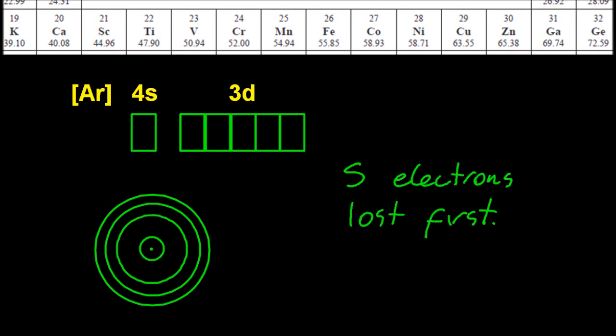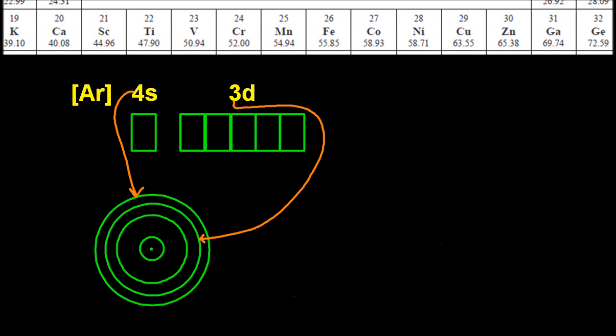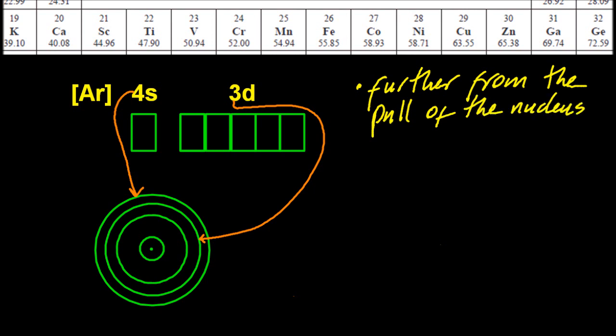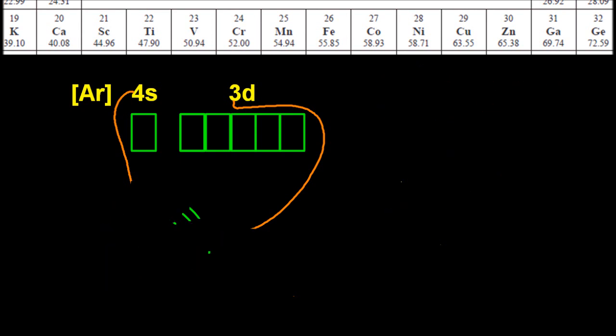First thing to know is that the S-electrons are lost first when these metals lose electrons. So why is that? Well, the 4S is on the fourth main energy level. It's the outer valence shell, the outer electrons. Other reasons: it's furthest from the pull of the nucleus, they have higher energy, and you could say they're less stable, but that's not a great answer. The S ones go first because they're on the outside shell.